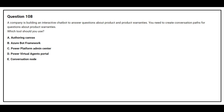Question number 108: A company is building an interactive chatbot to answer questions about products and product guarantees. You need to create a conversation path for questions about product guarantees. Which tool should you use? Option A: authoring canvas. Option B: Azure Bot Framework. Option C: Power Platform Admin Center. Option D: Power Virtual Agents portal. Option E: conversation mode. The correct answer is Option D: Power Virtual Agents portal.